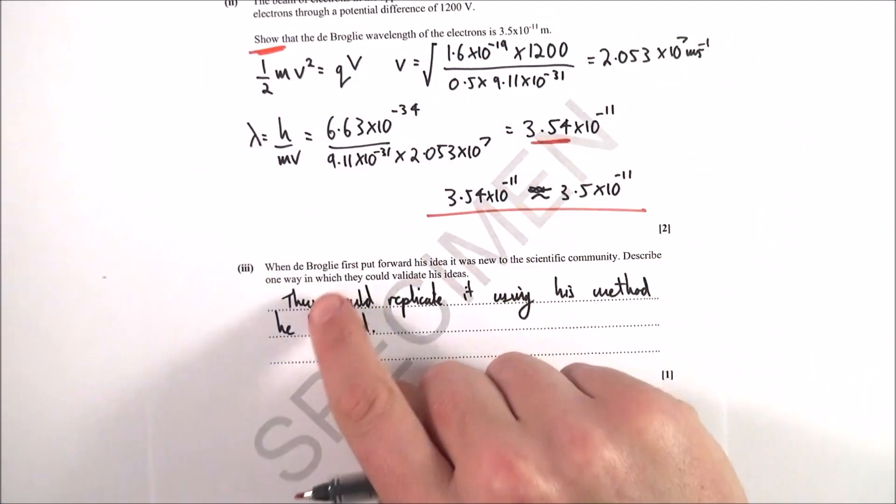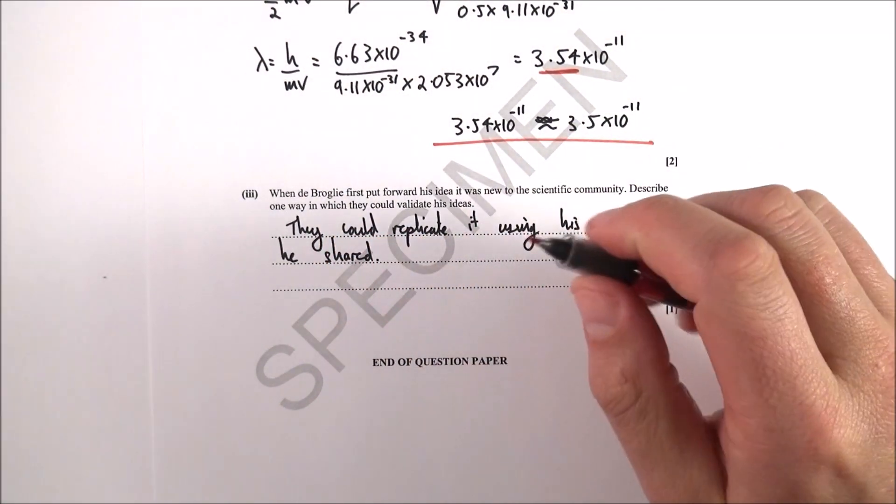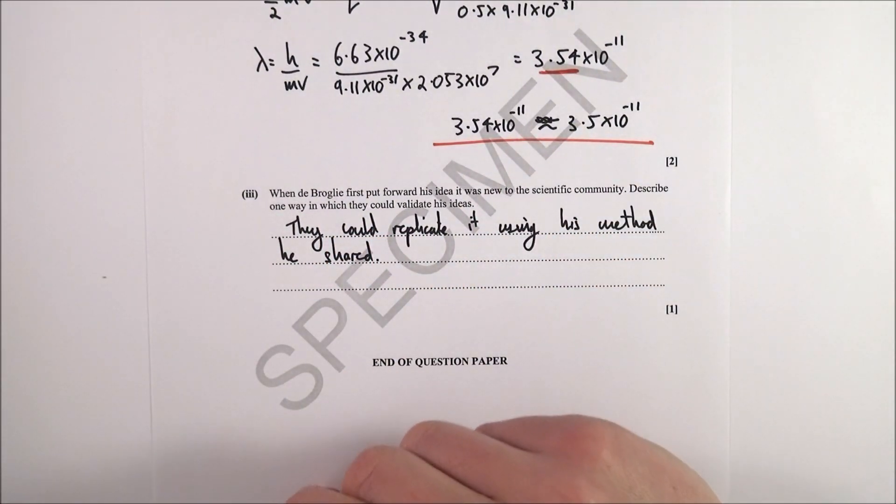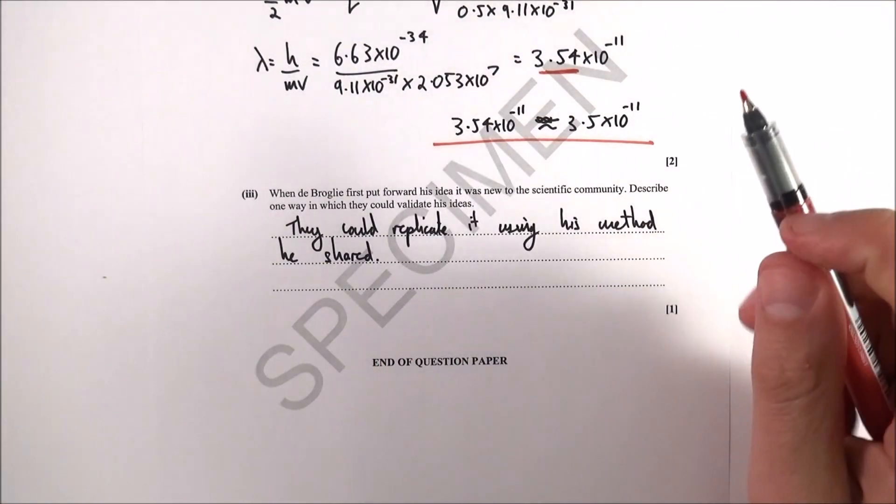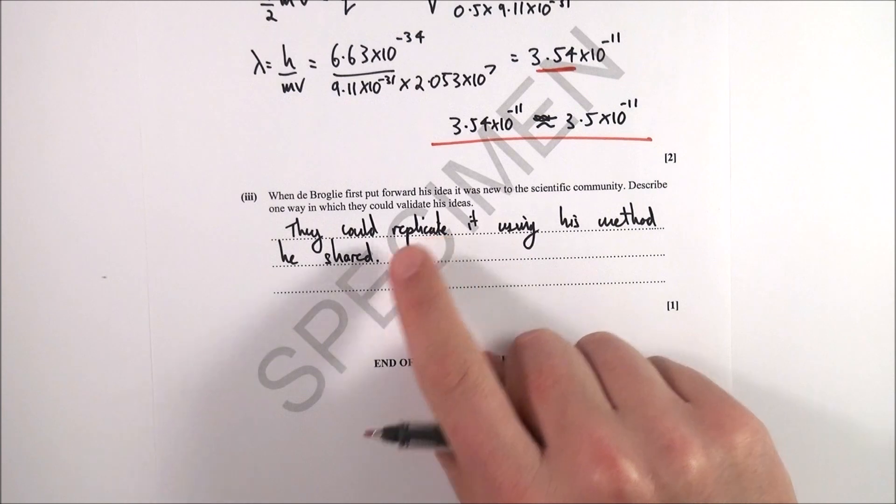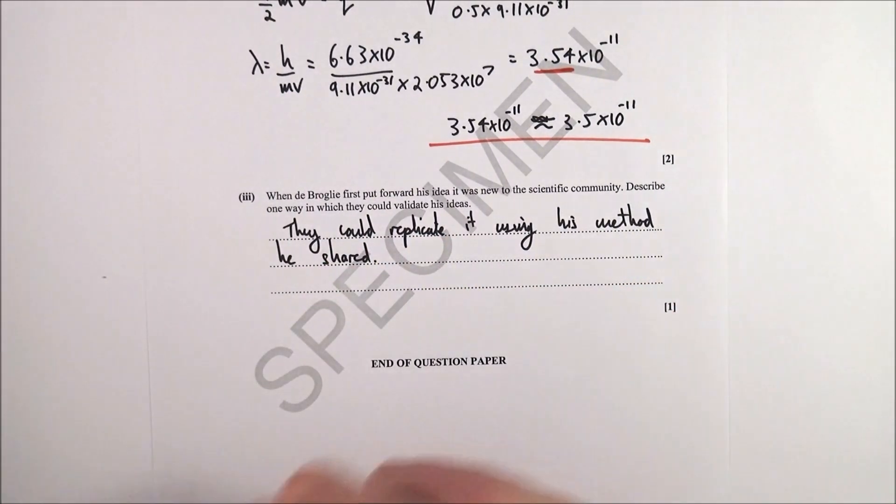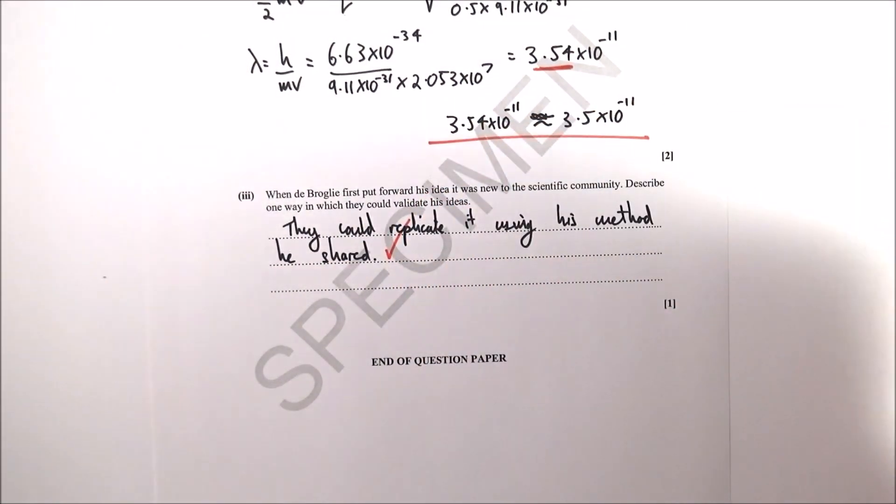Finally, this one: is this really the hardest question? I don't think so. When de Broglie first put forward his idea, it was new to the scientific community. Describe one way they could validate his ideas. Well, they could replicate it using his method. Straightforward general knowledge, and hopefully that's the right kind of answer. That's it.